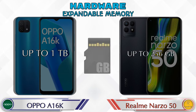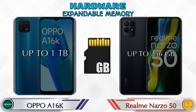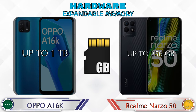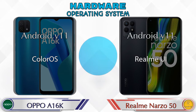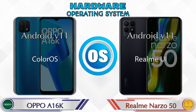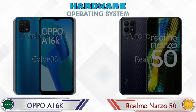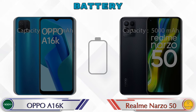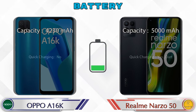For expandable memory, the A16k supports up to 1TB while the Narzo 50 supports up to 256GB. Both phones run the same Android 11 operating system.